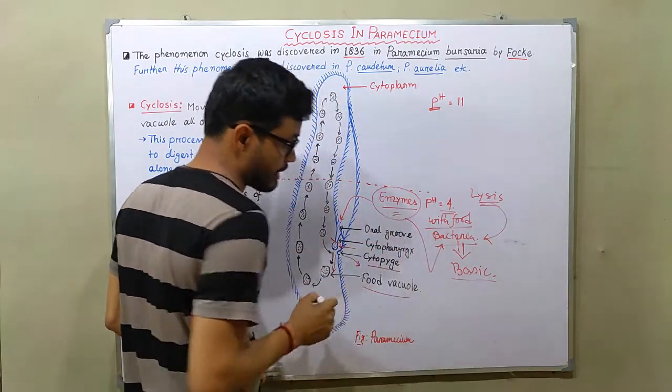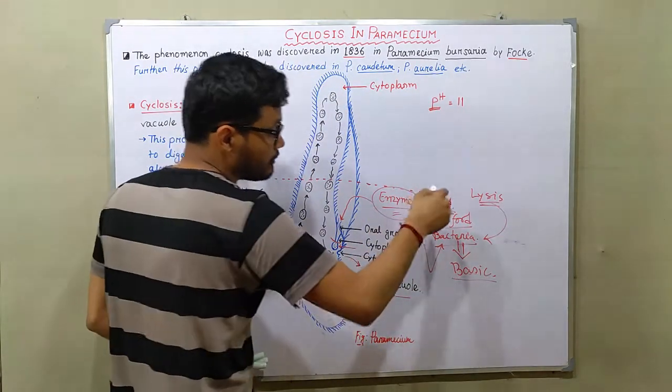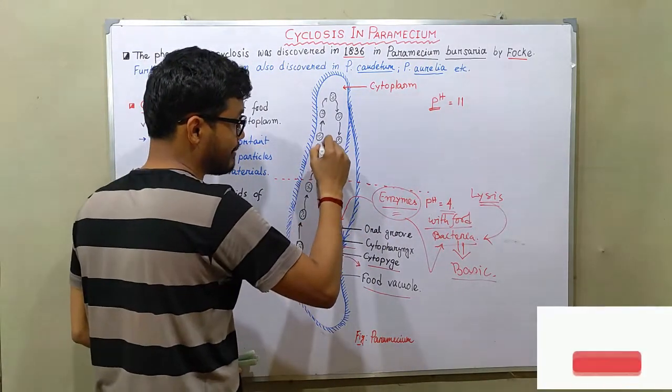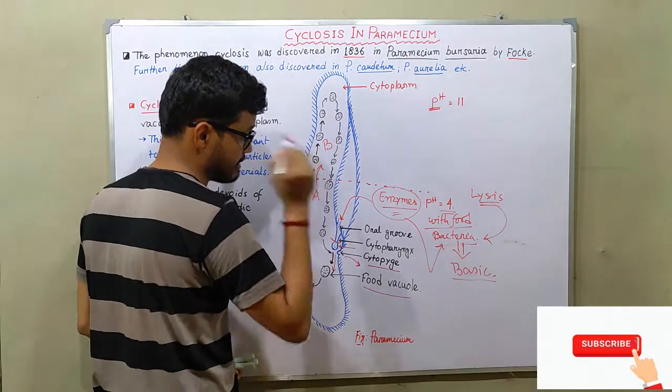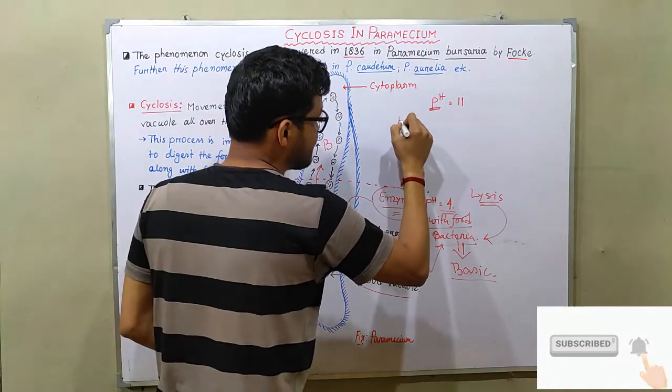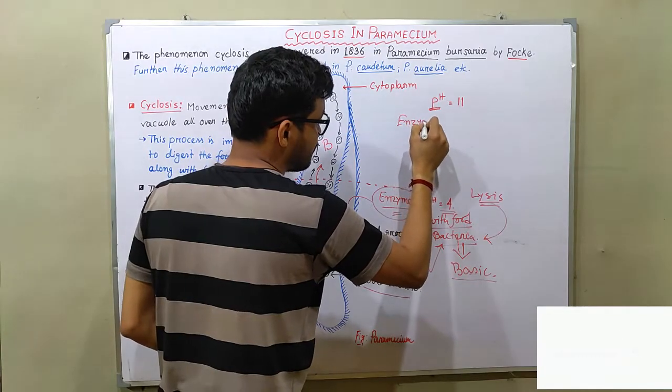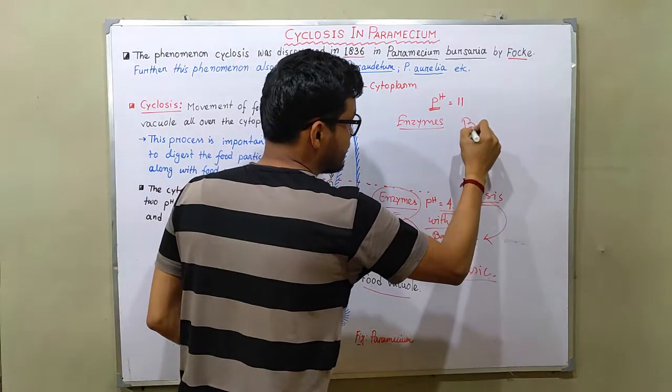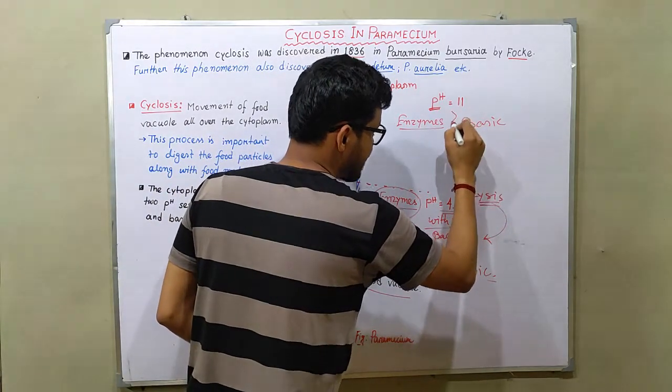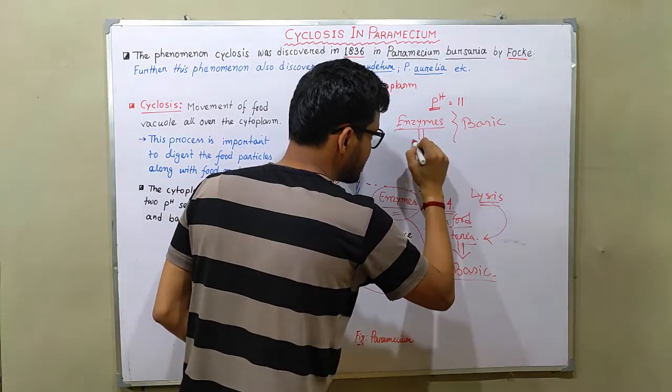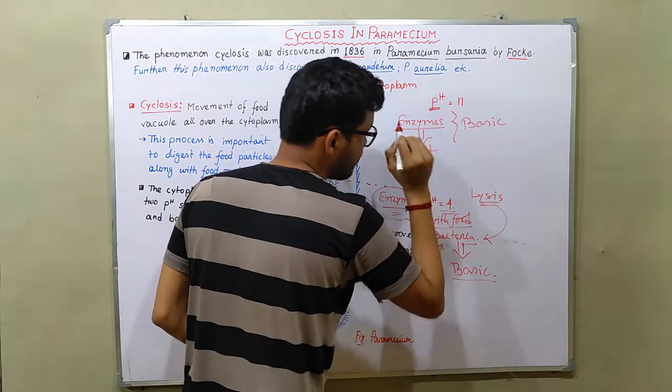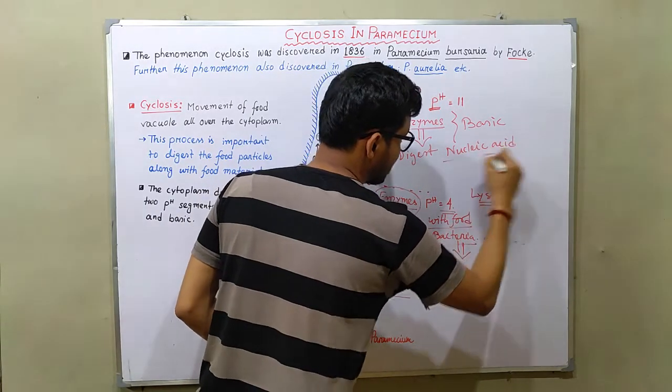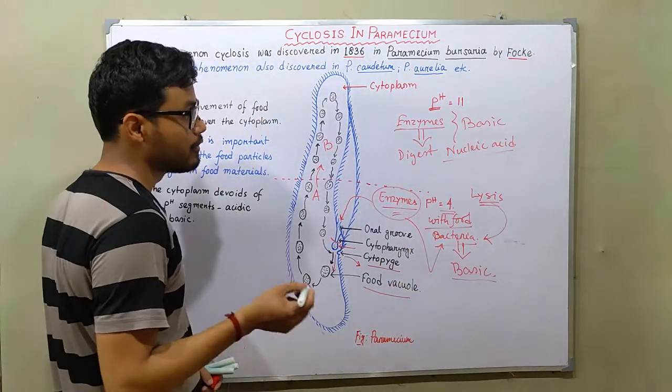And after that these food vacuoles are passed from acidic pH to basic pH. So this is basic and this is the acidic pH. In basic pH further enzymes are activated, those enzymes work only on basic pH. So these enzymes help to digest the nucleic acids of those particular bacteria.